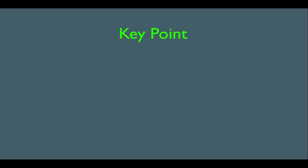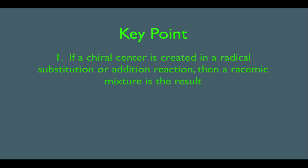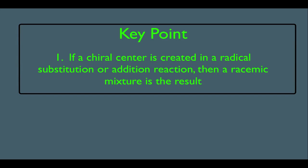In this online lecture, we're going to discuss the stereochemistry of radical reactions, and there's just one key point here. If a chiral center happens to be created in a radical substitution or addition reaction, then a racemic mixture is the result. What I want to do is explain how this works, and also talk about a quick product method as well.